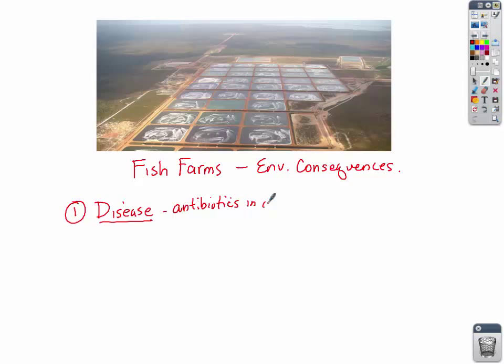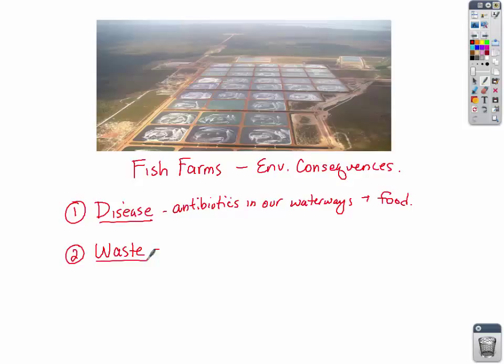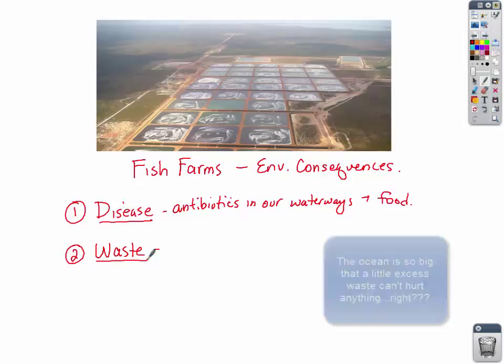A second environmental consequence: whenever you have a large population in a small area, there's a problem with waste. Think about the amount of waste thousands of fish in a small area are going to produce. That waste can be collected but we don't always know what to do with it, so one solution — the solution to pollution is dilution — we take that waste and throw it into the ocean.